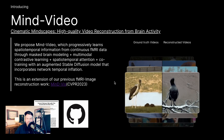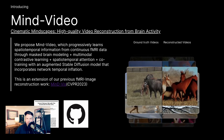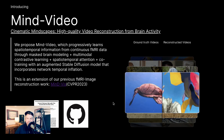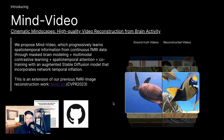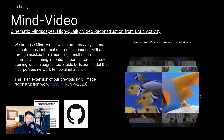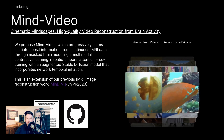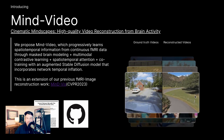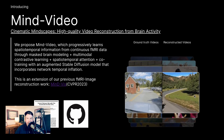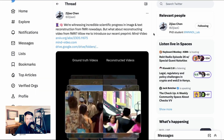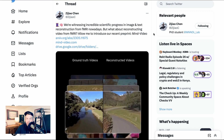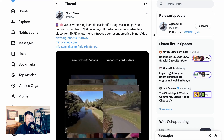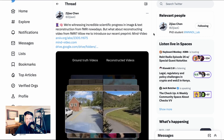What you're seeing right now is here on the left are the ground truth videos — the videos that were shown to test subjects under fMRI — and then on the right, the videos that were reconstructed from the brain activity that was measured by the fMRI. I came across this research after reading a thread from Zijiao Chen, one of the PhD students involved in the study.